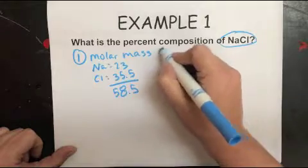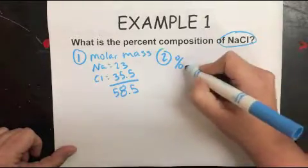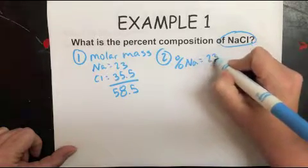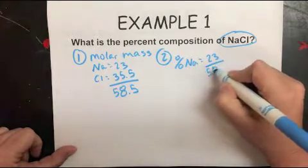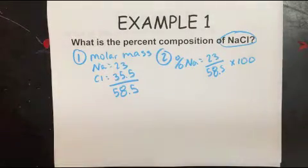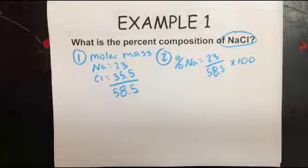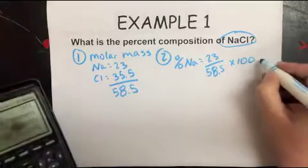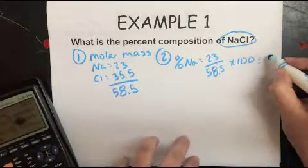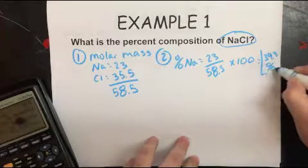That's what molar mass means. So step two then is to find the percent of each element in the compound. So percent of Na, you're going to do 23 divided by 58.5 times 100, which should give you 39.3% of Na.